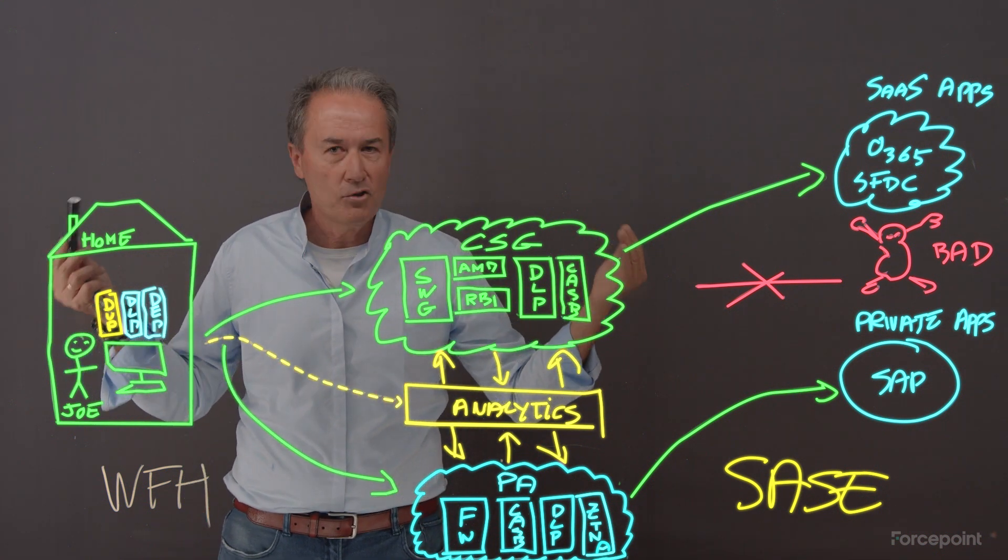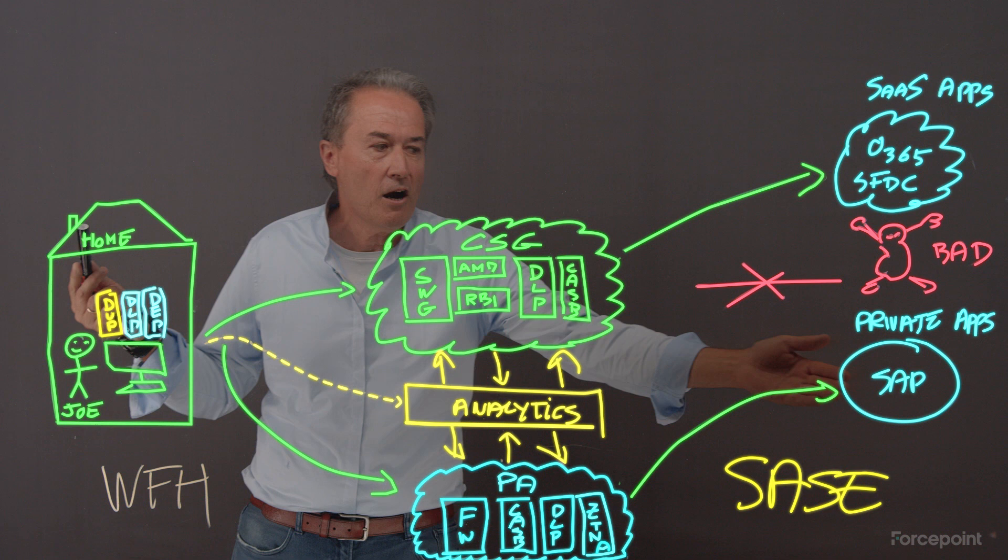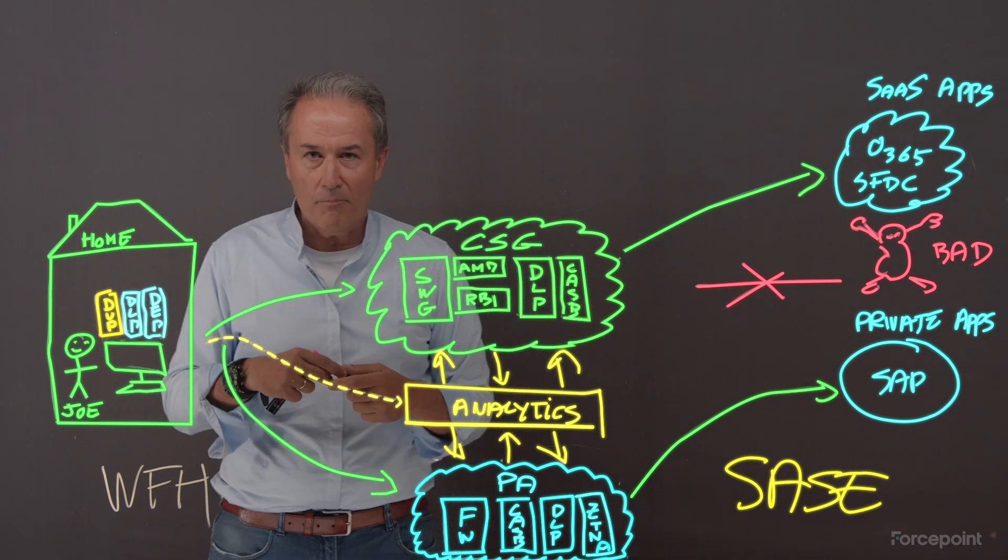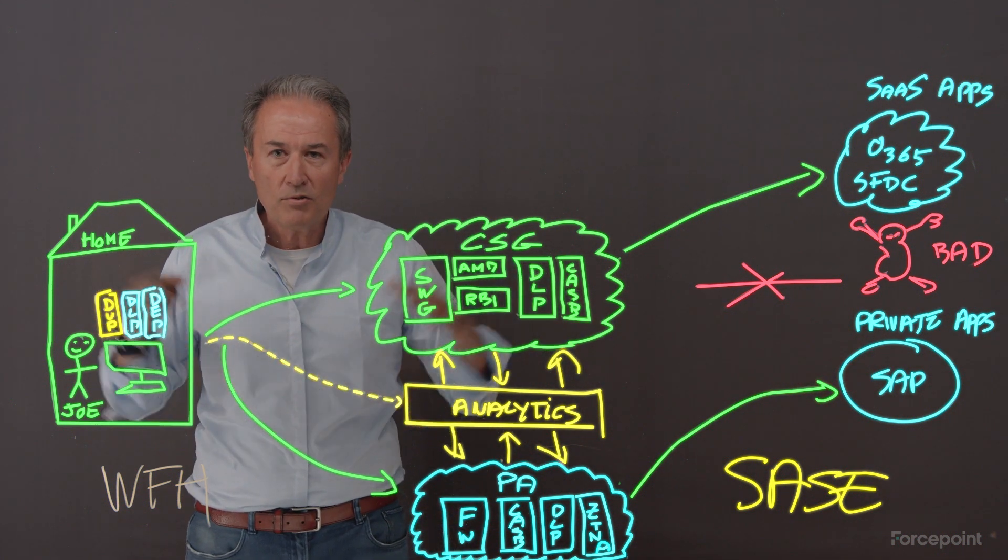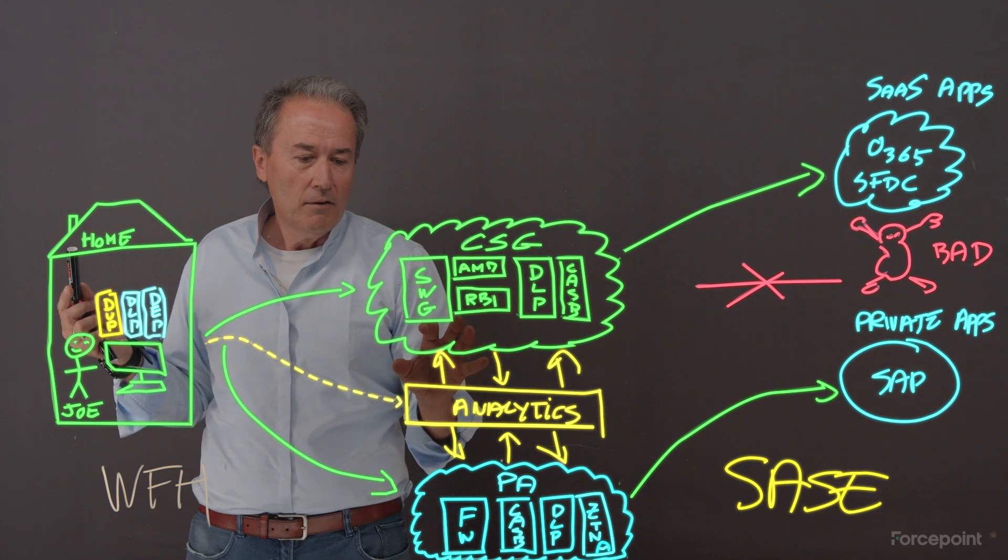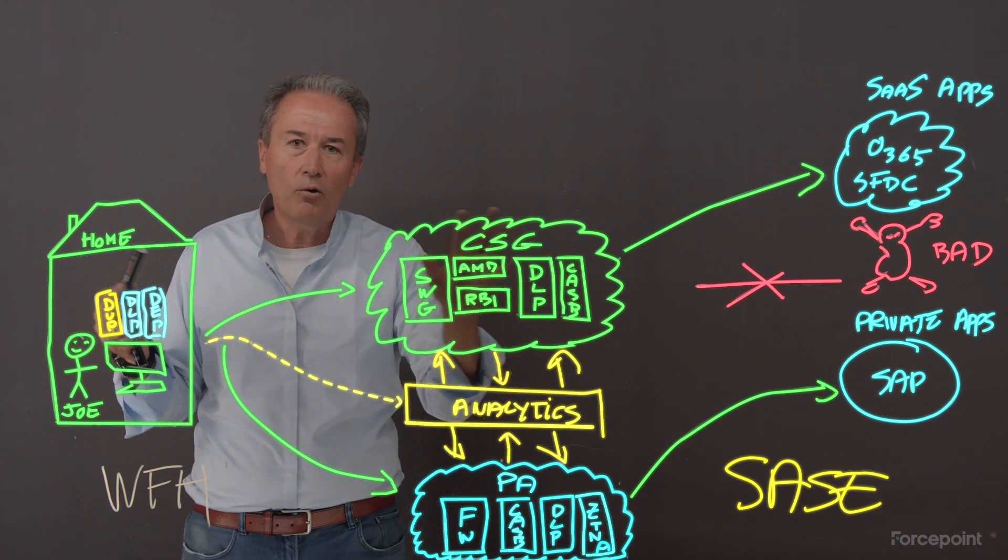The VPN. If Joe is risky, certainly he should not access the ERP system, that SAP on-prem from home. So you see the value of the risk driving all the control points.